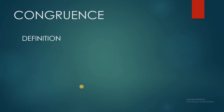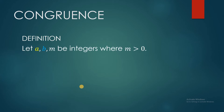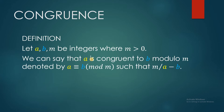By definition, let A, B, M be integers where M is greater than 0, meaning M is always positive, while A and B can be both positive and negative values. We can say that integer A is congruent to integer B modulo M, denoted by this expression, such that M now divides A minus B.